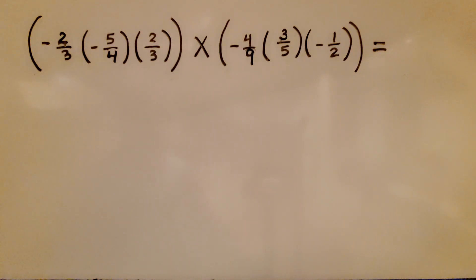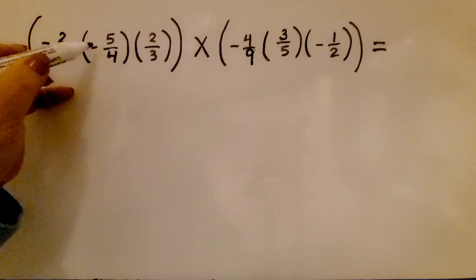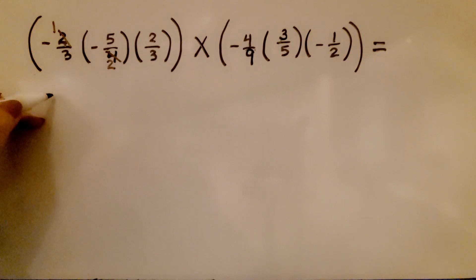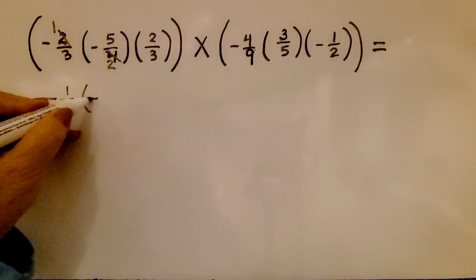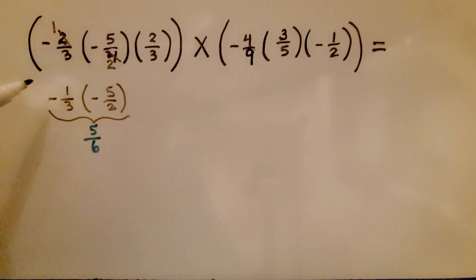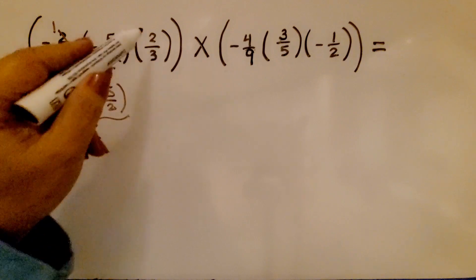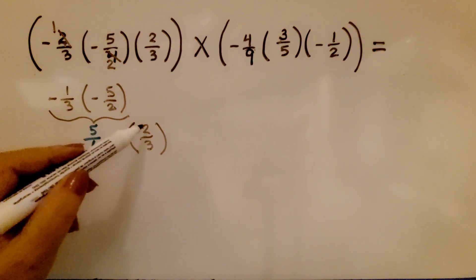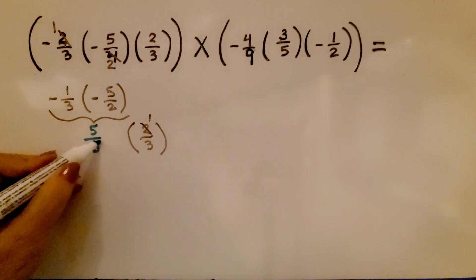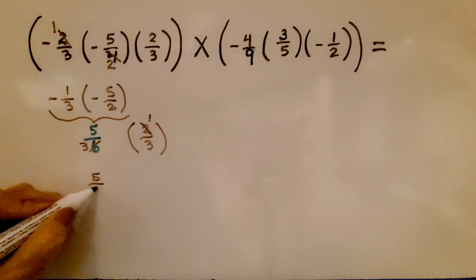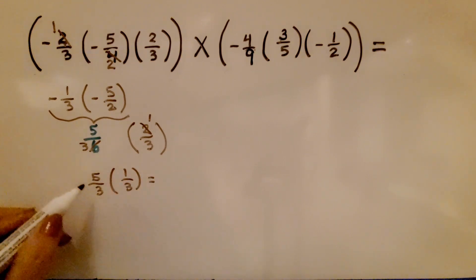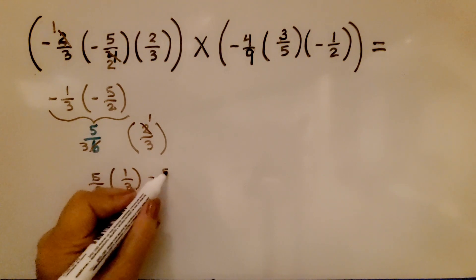Let's solve it. We have negative two-thirds times negative five-fourths. Right away we can cross out one two here and two twos there. Now we have negative one-third times negative five-halves. Multiplying straight across gives five over six. They have like signs so it's a positive five-sixths.